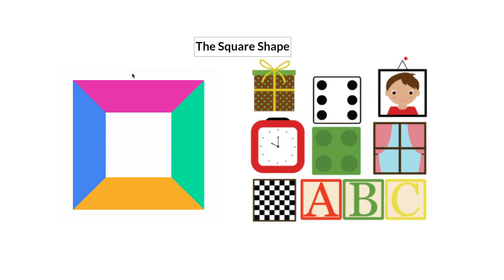Let's take a look here at the frame. The frame has a square shape. What about the window? The window has a square shape. And here we have a square shape, and the sounds are in square boxes. So the shape of this week is the square shape.